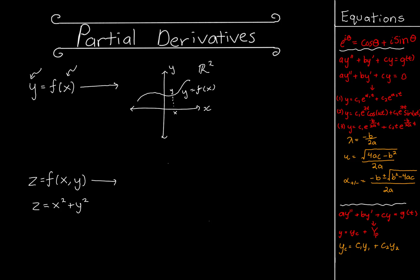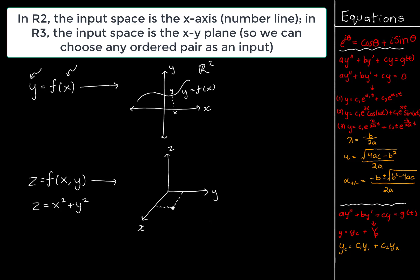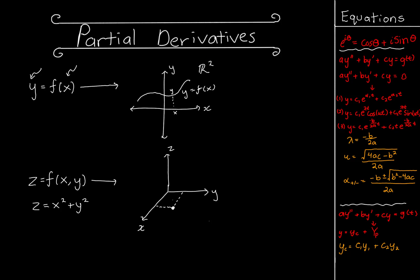For functions of the form z equals f of x y, we put this in space R3 — three spatial dimensions — with axes x, y, and z. We have the freedom to choose whatever x and y we want, so instead of having one number line along the x-axis, we have an entire plane full of numbers from which to choose a pair of coordinates to input into the function. At any point on this plane there will be a corresponding z value.